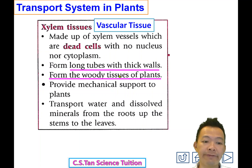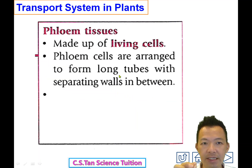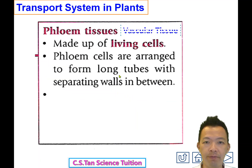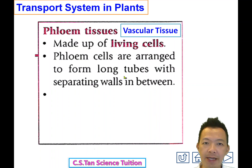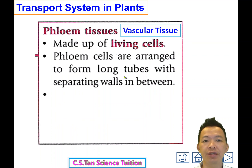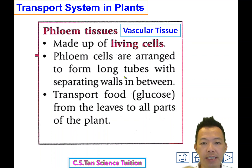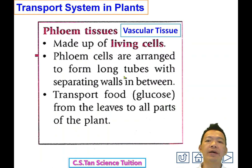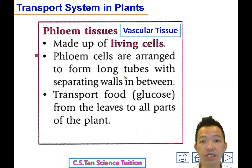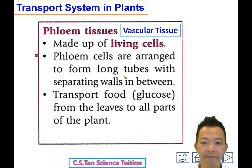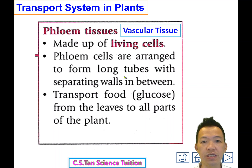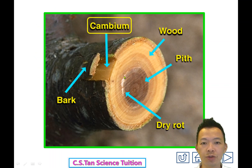The second tissue is phloem tissue — 第二種組織叫phloem tissue. It is also a vascular tissue 血脈組織. The function of phloem tissue is to transport food (glucose) from the leaf to all the parts of the plant 把食物從葉子送去植物的其他地方.